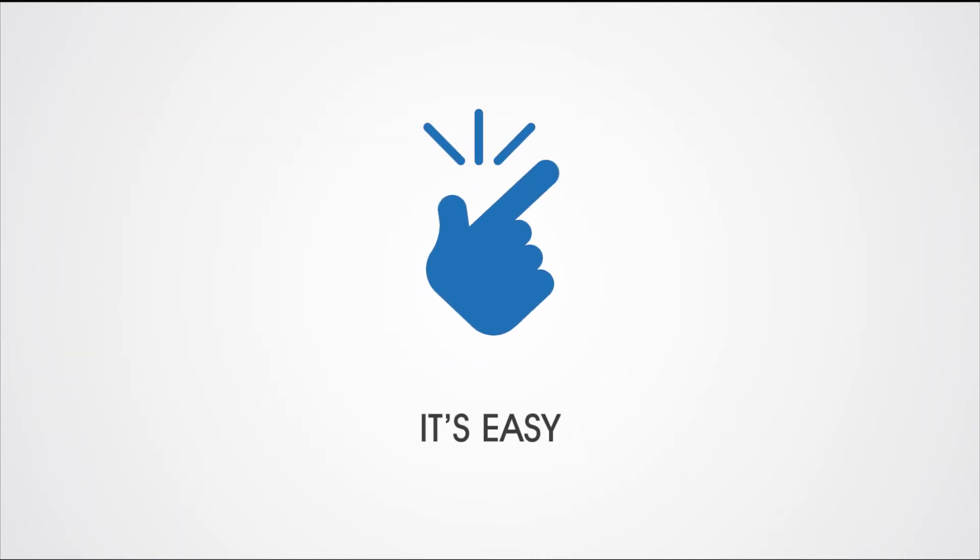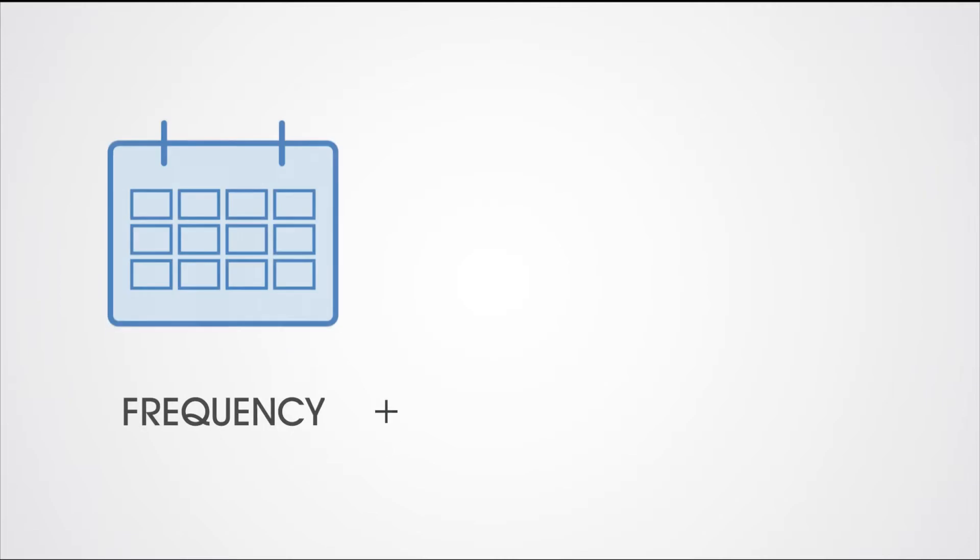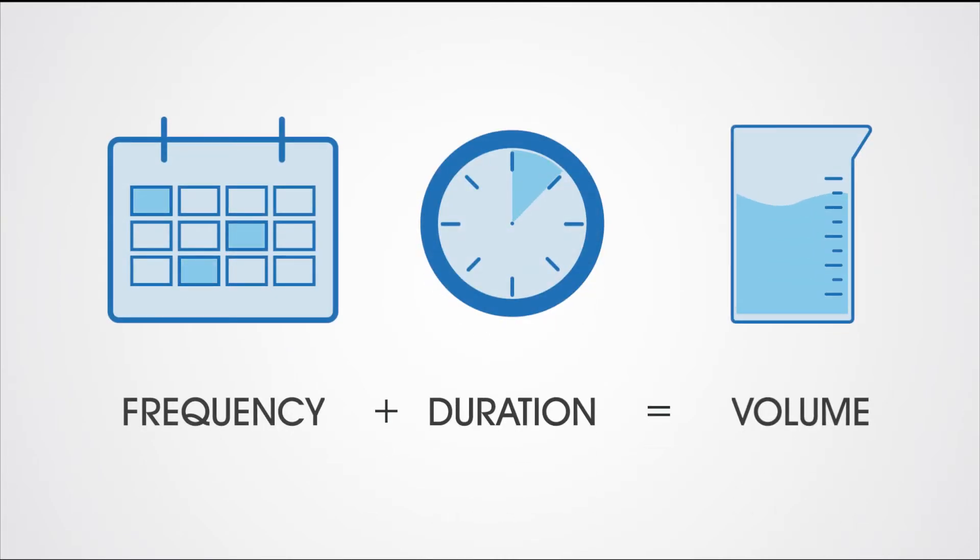So how does it work? It's easier than you think. A controller tells solenoid valves when to release water into the system. You can control when and how long to water based on your irrigation system.